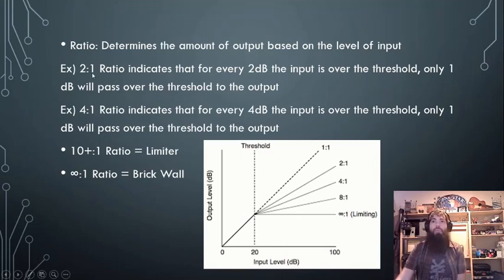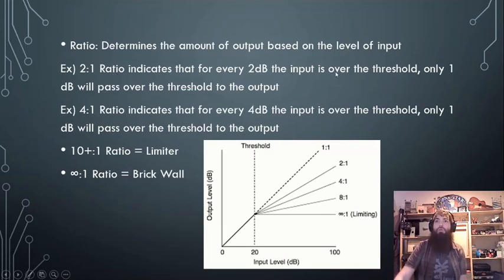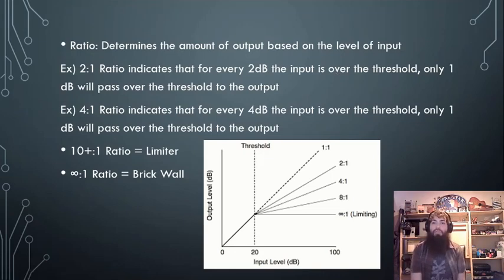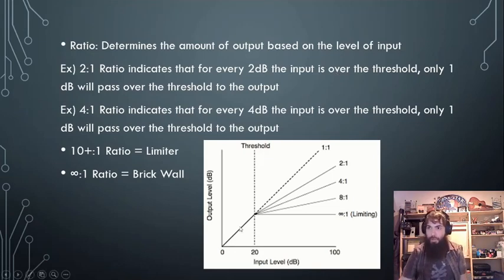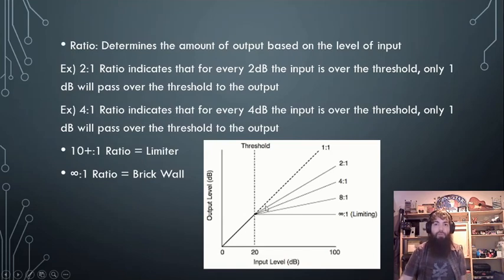A 2:1 ratio indicates that for every two decibels the input is over the threshold, only one decibel will pass to the output. Here you can see the normal output level at 1:1 — where output equals input.